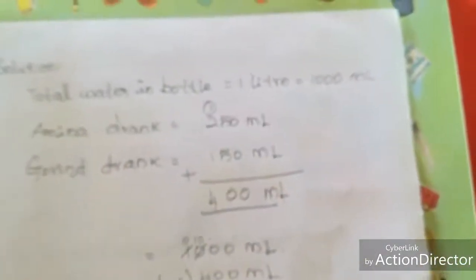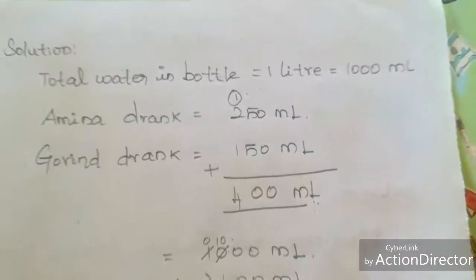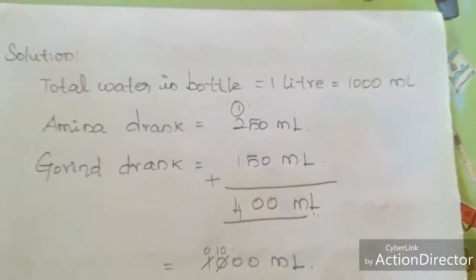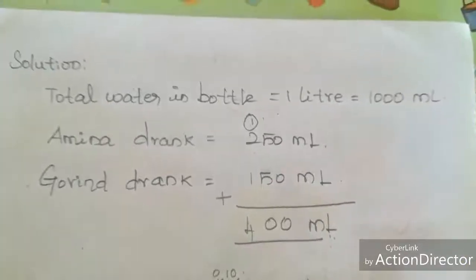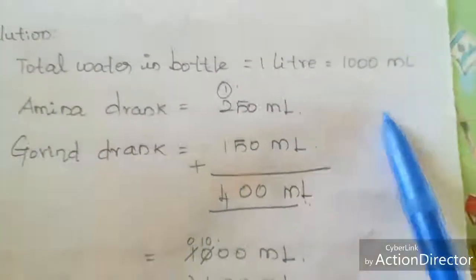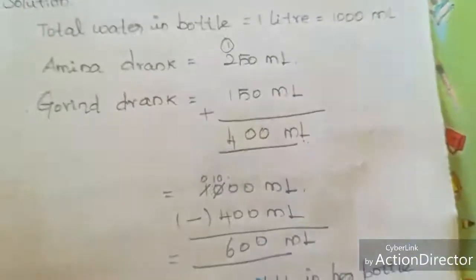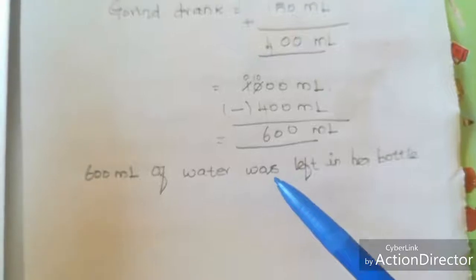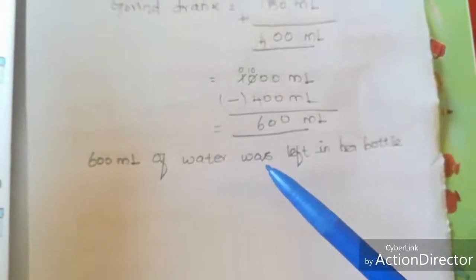To summarize: first we convert 1 liter into 1000 ml, then we add Amina's and Govin's amounts — 250 plus 150 equals 400 ml. Next, we subtract 400 ml from 1000 ml. That gives 600 ml left in her bottle.